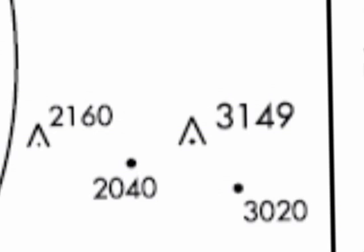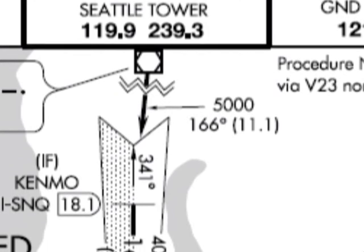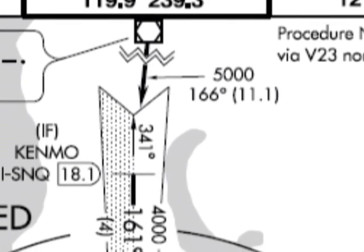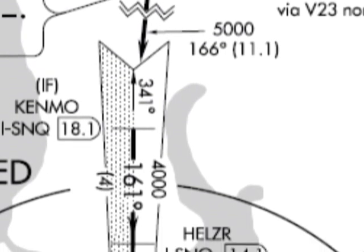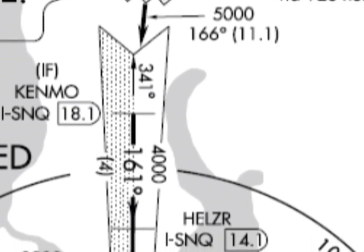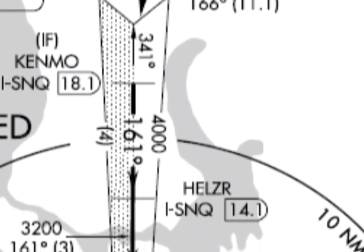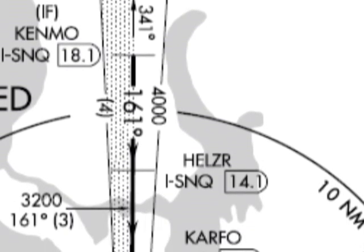The procedure track: this bold line arrow indicates the approach path for a procedure track inbound to the airport. It shows a heading value in the center of the arrow. So in this example, a heading of 161 is shown as the procedure track for the approach.